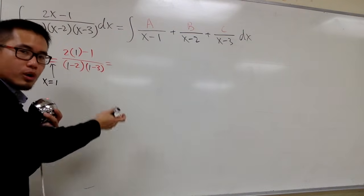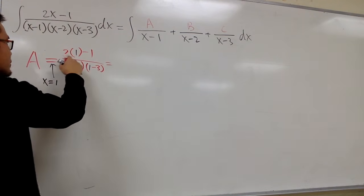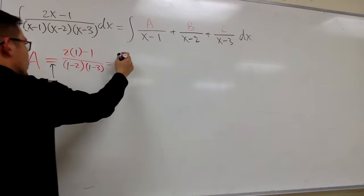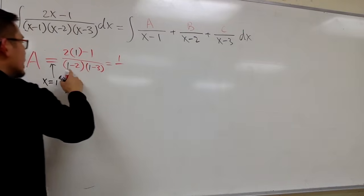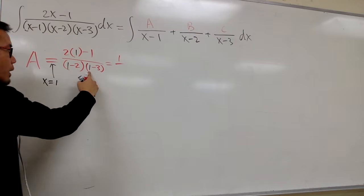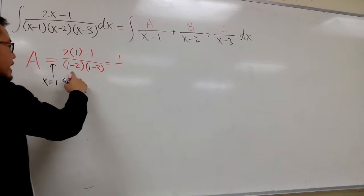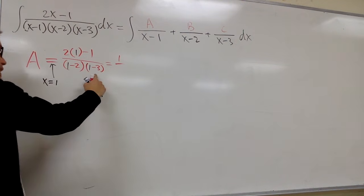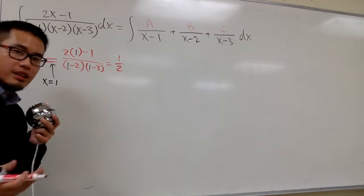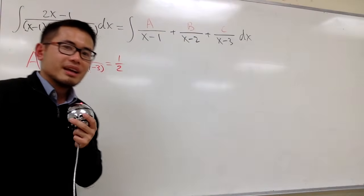Working this out: on the top, 2 times 1 is 2, minus 1 is 1. On the bottom, 1 minus 2 is negative 1, and 1 minus 3 is negative 2. Negative 1 times negative 2 gives positive 2. Therefore A is equal to 1 over 2, or positive one-half.